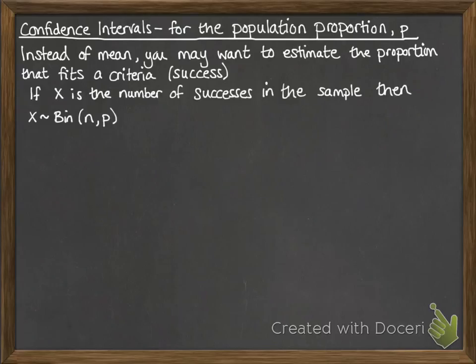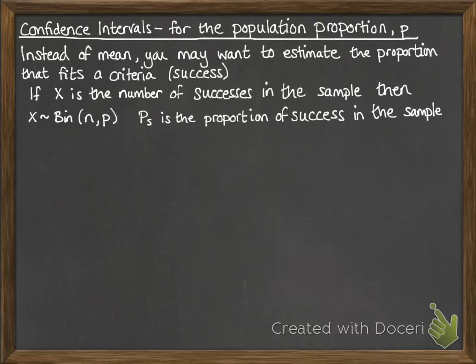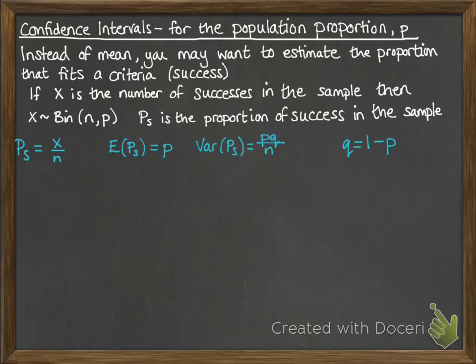So if X is the number of successes in the sample, then X would follow a binomial distribution. N is the number of trials, and P is the probability of success. For the sample, P with a subscript S is the proportion of successes in the sample, which is the number of successes divided by the number of samples — giving our proportion within that sample. We can then get the expectation and variance from this. There are proofs of those in your textbook if you'd like to look at them; they're not very difficult, but you don't need to reproduce them.